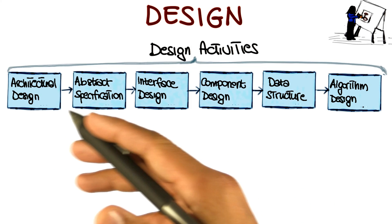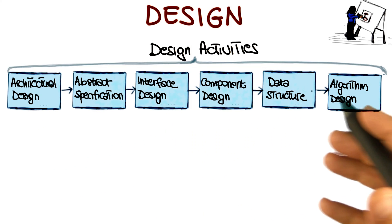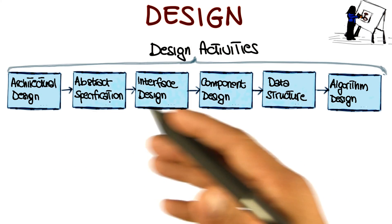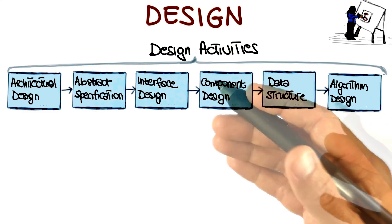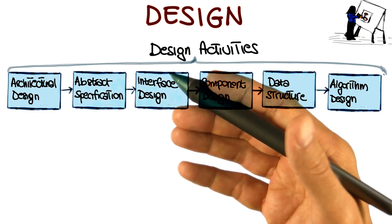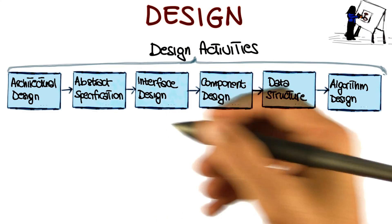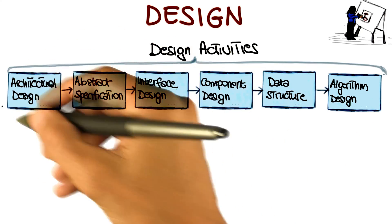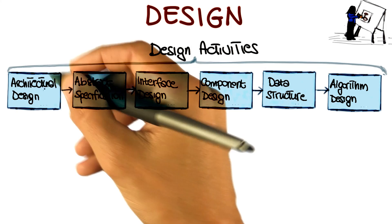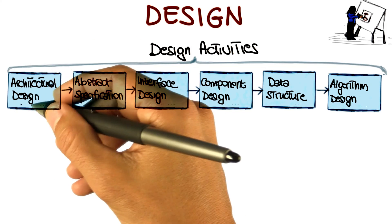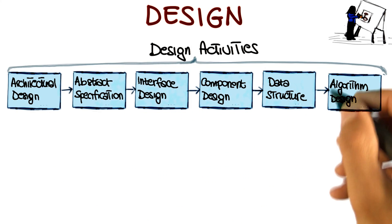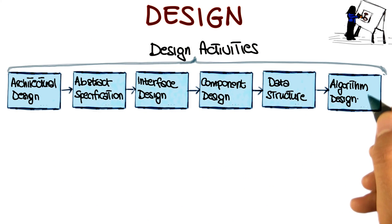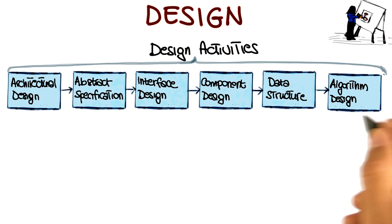And if you look at different books and different sources, you might find different activities described. But the core idea, the important point, is that we go from a sort of a high-level view of the system, which is the architectural design, to a low-level view, which is the algorithm design.